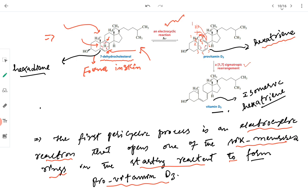This first pericyclic process leads to formation of provitamin D3. Provitamin D3 then undergoes a 1,7 sigmatropic rearrangement — I have marked the numbering system here. The hydrogen at position 1 shifts to position 7. After this 1,7 sigmatropic rearrangement, it leads to formation of vitamin D3, which is an isomeric hexatriene.